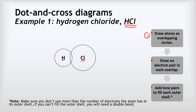Step two is that we're going to draw an electron pair in each overlap. We've only got one overlap, so we draw one electron pair. We've drawn it as a dot and a cross: the dot represents the electrons from hydrogen, and the cross represents the electrons from chlorine. We do it this way just so it's clearer where the electrons have come from, but we don't have to — we can do them both as dots or both as crosses. It doesn't matter; you wouldn't gain or lose any marks in the exam for whatever choice you made.